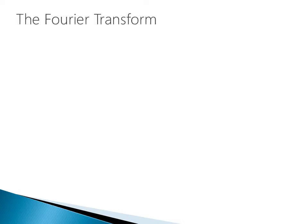Stuart Riffle has an elegant single-sentence explanation of the Fourier Transform. Breaking down the intimidating formula with color-coded components — imaginary numbers, pi, numbers along a particular path — essentially what it says is: to find the energy at a particular frequency, we spin the signal around a circle at that frequency (the 2π in the equation) and then average a bunch of points along that path.